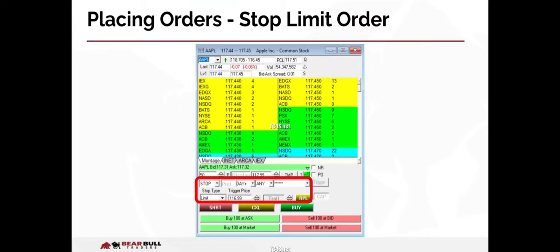Another stop order option is a stop limit order. For this type of order, you would choose limit for the stop type. The danger with a stop limit order is that it may not be filled if the price is moving quickly. For this reason, it is better to use a stop market order to fully exit a trade that is moving against you. However, stop limits can be great for taking partial profit on a winning trade.